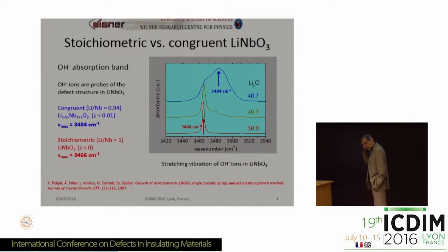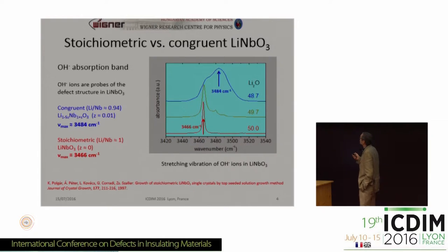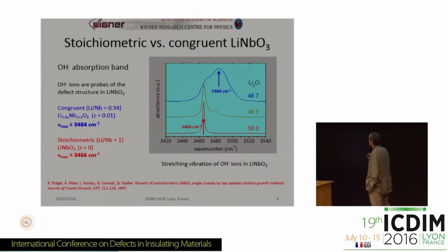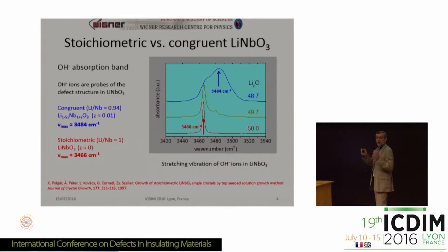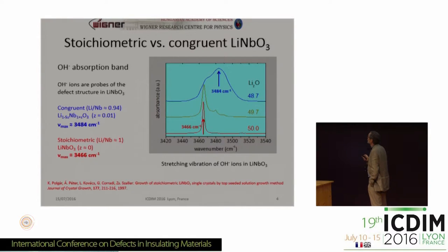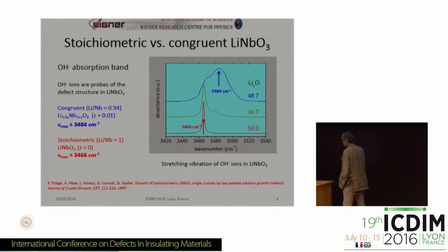The properties of lithium niobate are different in congruent and stoichiometric crystal — there are many properties which are different. For example, the ultraviolet absorption edge or the photorefractive properties and so on. Here I focus only on the OH absorption band. In the congruent crystal, we have a very broad absorption band related to OH in different surroundings — we have many defects around the OH: lithium vacancies, anti-site niobium — so that is the reason why we have an overlap of different band components. On the contrary, in the stoichiometric crystal, we have a very nice sharp line related to OH, which means that we have only one site for the OH, and this band is around 3,466 reciprocal centimeters.